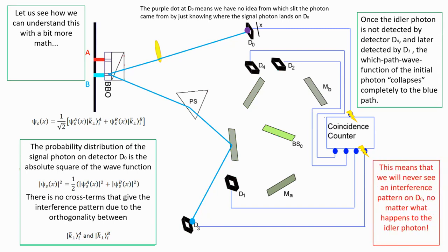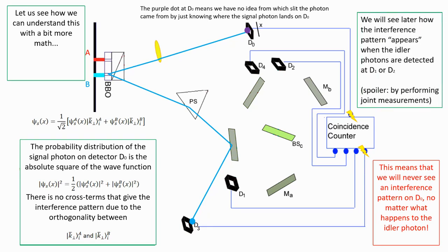This means that we will not see interference pattern no matter what happened to the idler photons later. We will see later how the interference patterns seemingly reappear when the idler photon is detected by either D1 or D2.